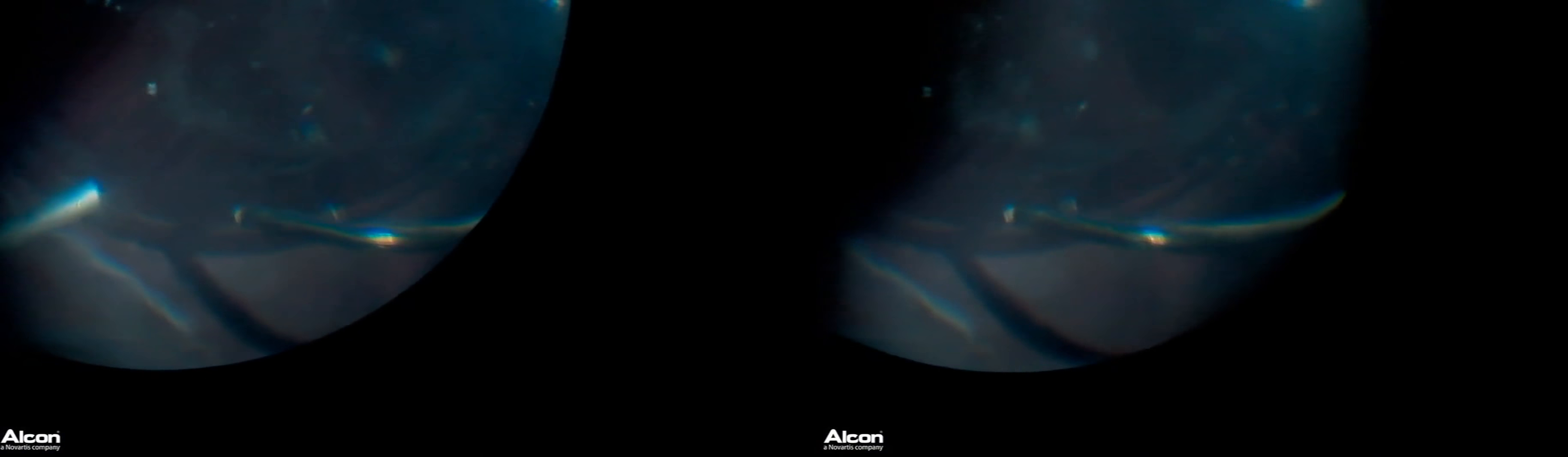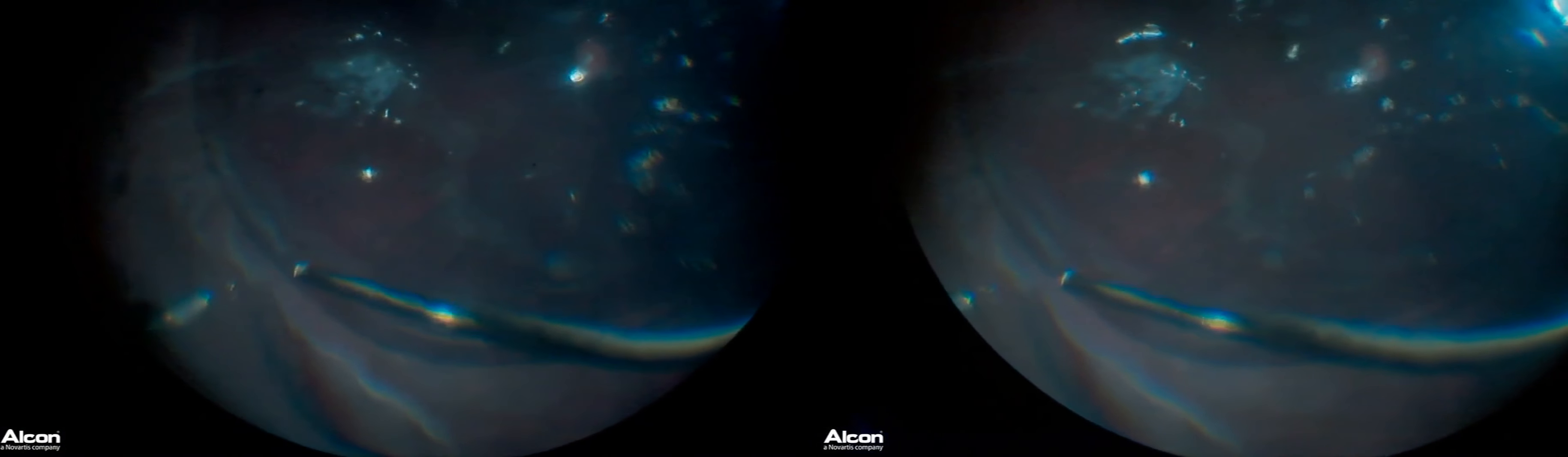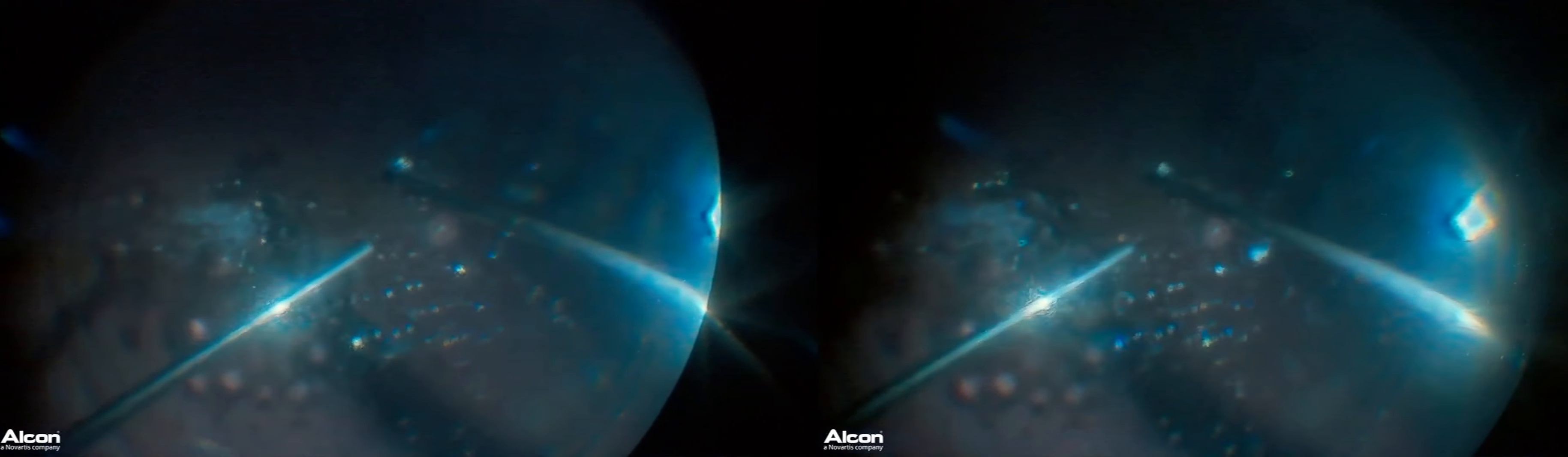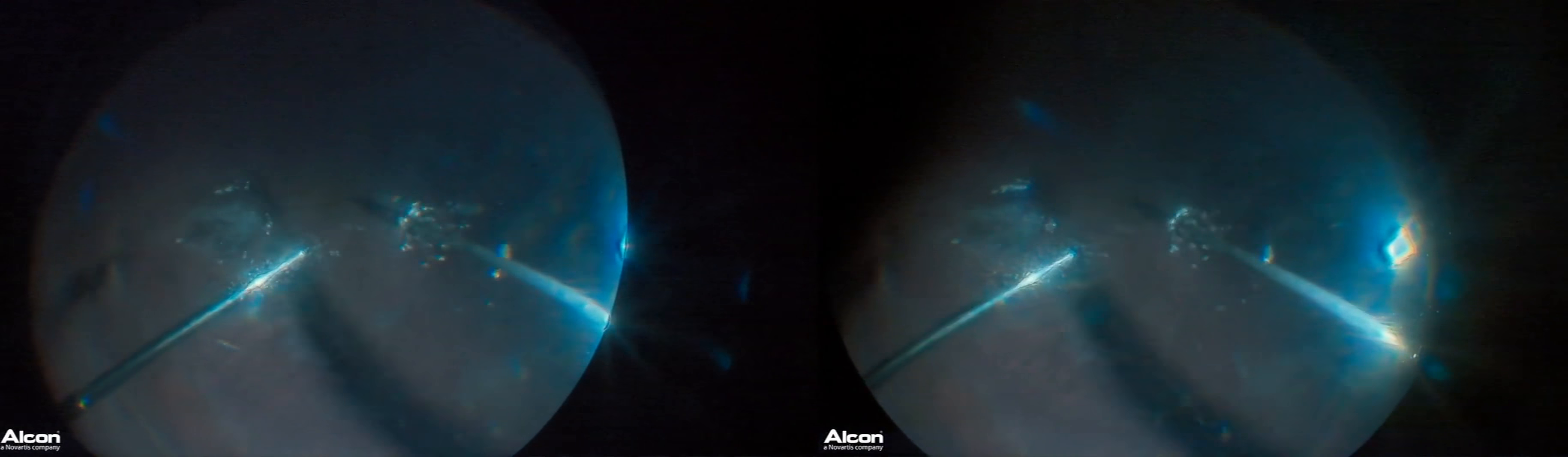Here we put in a partial perfluorocarbon fill, which allows us to do the peripheral vitrectomy. And again, with ingenuity, our depth of focus is so nice. We can see both the anterior retina is in focus as well as the posterior retina, and we're really able to get a nice, complete vitrectomy.